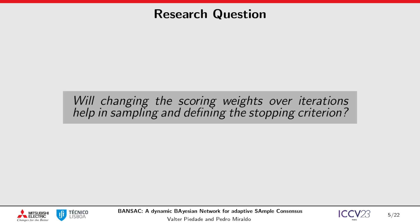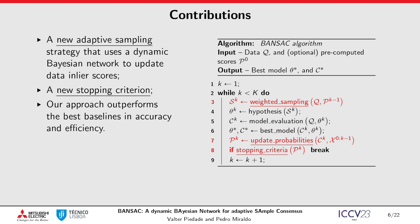What we are trying to answer with this work is: will changing the scoring weights over iterations help in sampling and defining the stopping criterion? Our contributions in this work are a new adaptive sampling strategy that uses a dynamic Bayesian network to update data inlier scores, a new stopping criterion, and we show that our approach obtains state-of-the-art results in accuracy and efficiency in several applications using real-world datasets.